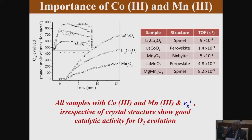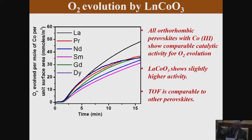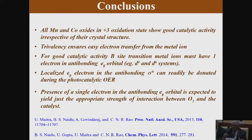I believe in the importance of the e_g electron — one electron in the e_g orbital — that is present in intermediates like cobalt 3+ or manganese 3+. There is theoretical reason to believe this is responsible. So we made compounds of cobalt oxides and manganese oxides containing one e_g electron, and that gave fantastic amounts of oxygen, very reliably. We had a paper in PNAS on this a couple of years ago and showed this to be true with a number of cobalt oxides.